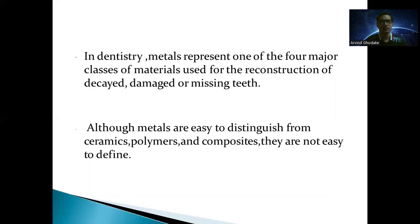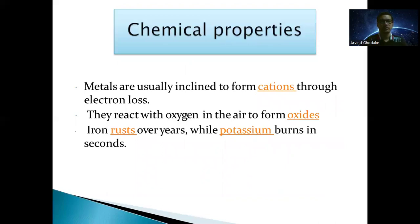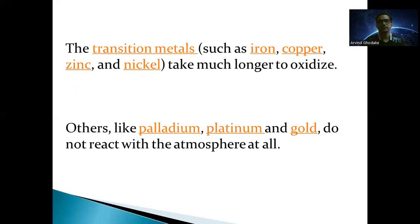Chemical properties of metals: metals are usually inclined to form cations through electron loss. They react with oxygen in the air to form oxides — for example, iron rusts over years while potassium burns in seconds. The transition metals such as iron, copper, zinc, and nickel take a much longer time to oxidize, while others like palladium, platinum, and gold do not react with the atmosphere at all.